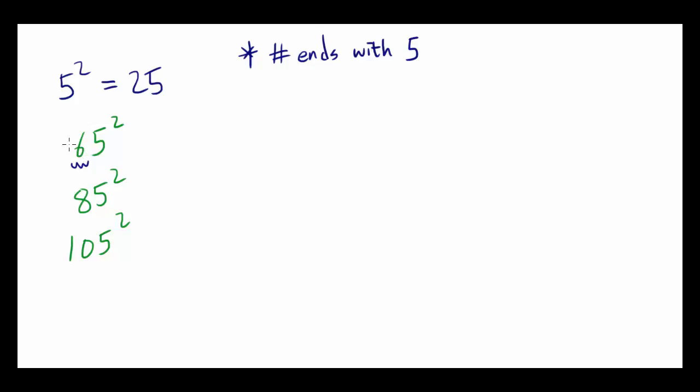Like for 6, what's 6 plus 1? Well, that's 7, and what's 7 times 6? That's 42, and you're always going to put 25 at the end. Let's try 85.